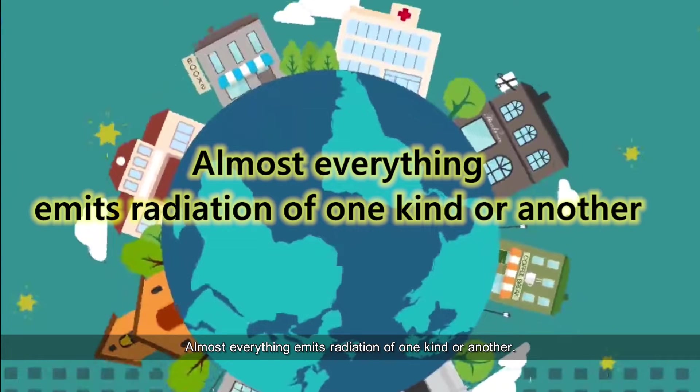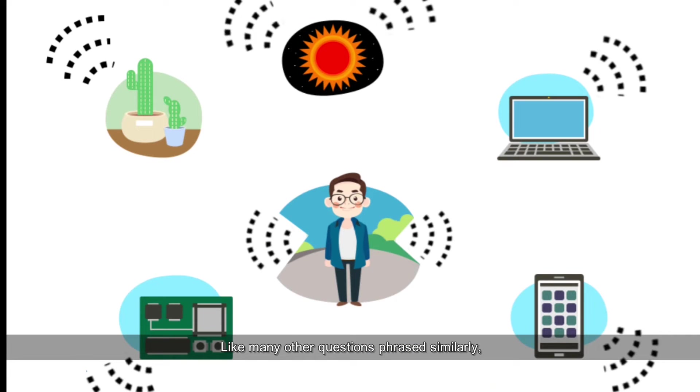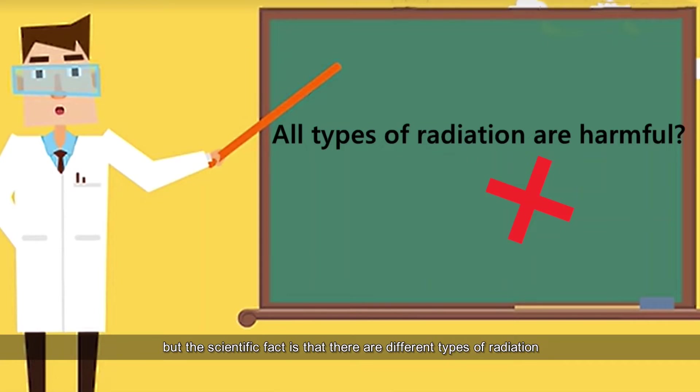Almost everything emits radiation of one kind or another. Like many other questions phrased similarly, you are implying that radiation is dangerous. But the scientific fact is that there are different types of radiation and not all of them is harmful.